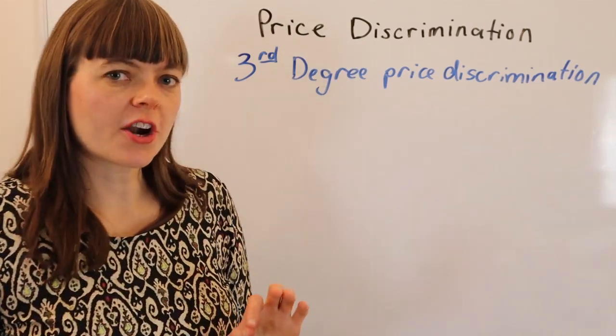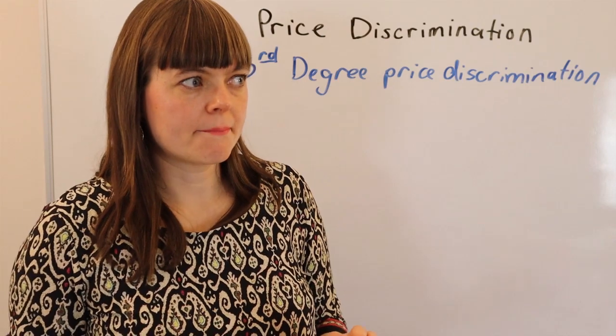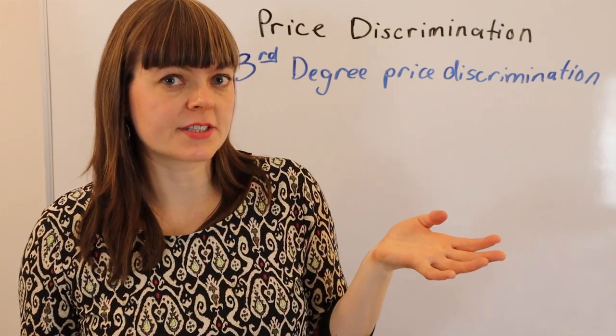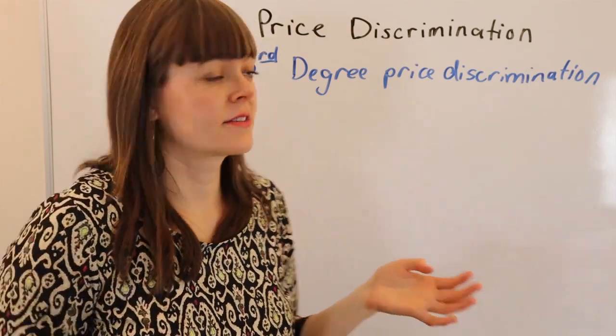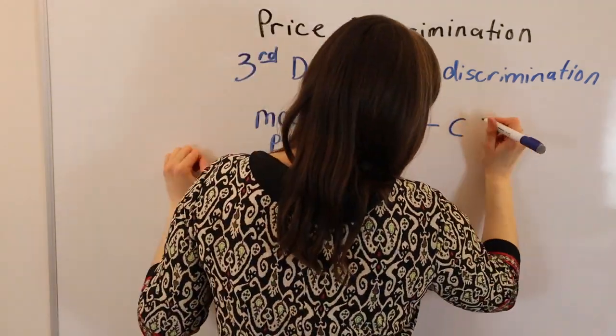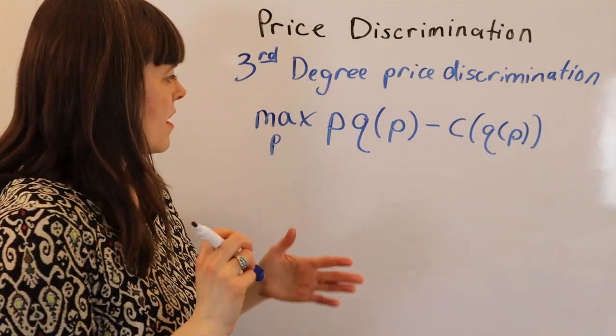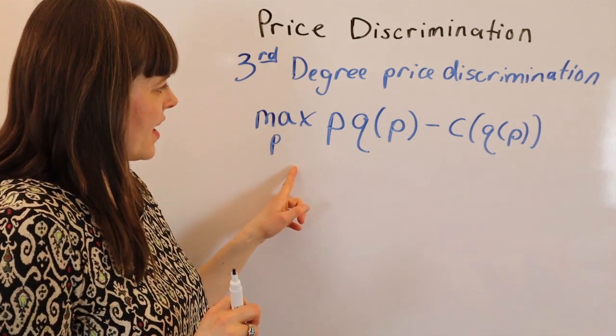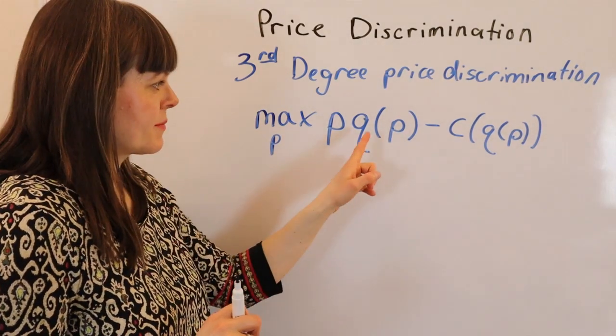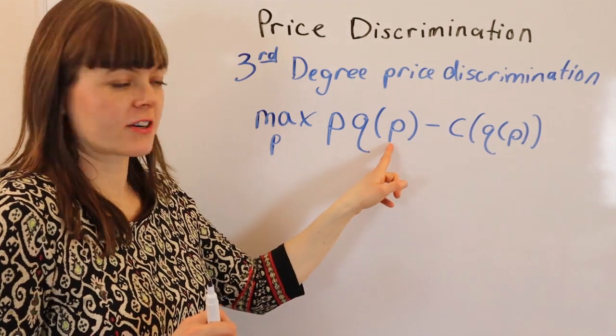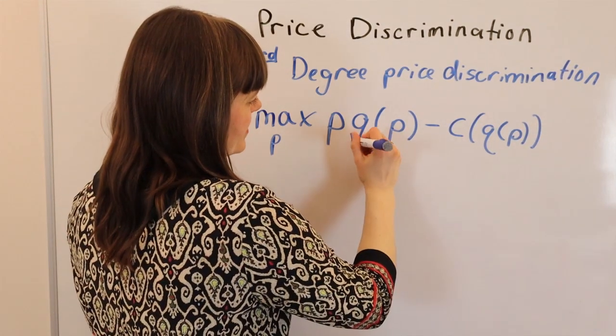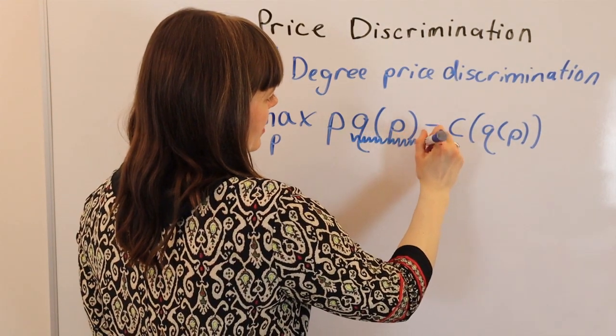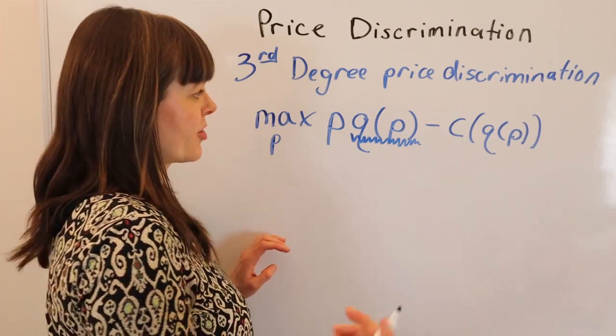So basically, if you start out with a classic monopoly model profit maximization problem, it's going to look like this. Okay, so the monopoly is choosing price, and the revenue is price times quantity, where quantity is a function of price. And of course, this thing right here, this price-quantity relationship, that is a demand curve.